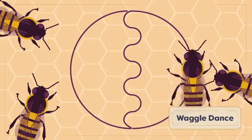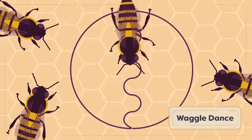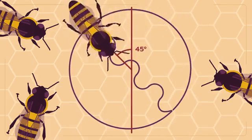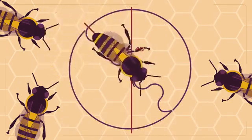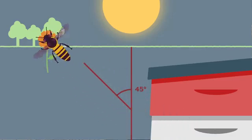The aptly named waggle dance is used to communicate precise information, specifically the direction and distance of faraway food sources. The waggle dance takes on a figure-eight pattern and the bees shake or waggle their abdomens during the performance. The angle from the vertical axis of the straight portion of the dance indicates the direction of the food source relative to the sun. The length of the straight portion communicates distance, and the longer the straight portion, the greater the distance.